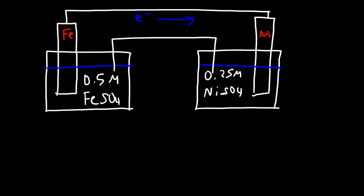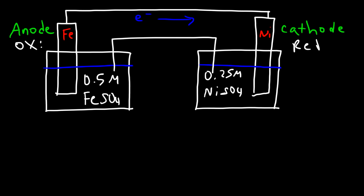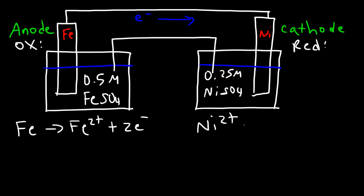Electrons flow from the anode to the cathode, and oxidation always occurs at the anode while reduction occurs at the cathode. So we can write the half reactions: the oxidation reaction is Fe changing into Fe²⁺ and emitting two electrons, and the reduction reaction is nickel acquiring two electrons to turn into nickel metal.